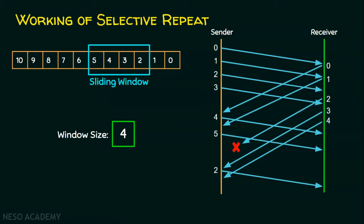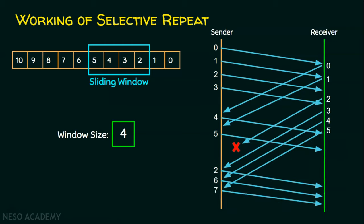Frame number 4 is now acknowledged, and the sender sends frame number 6 only. The receiver acknowledges further packets and the sender continues sending the next frames. If you observe here, there is no significant role for the sliding window size, because the sender retransmits only the frames for which a negative acknowledgement is received or no acknowledgement is received. That's the working of selective repeat ARQ.